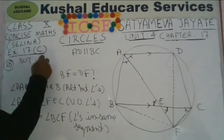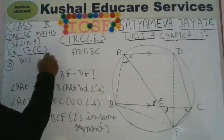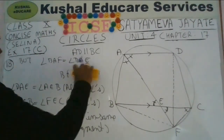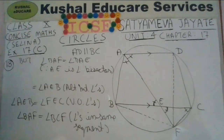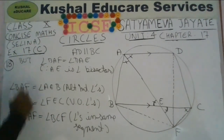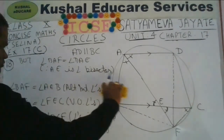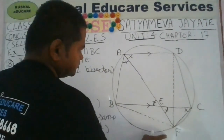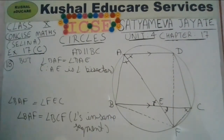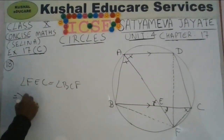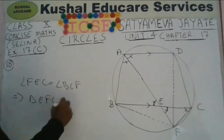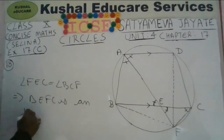AE is the angle bisector of angle BAD, so angle BAE equals angle EAD. Therefore angle FCE equals angle BAF equals angle EAD equals angle AEB equals angle FEC. Since angle FEC equals angle FCE, triangle FCE is isosceles, and therefore EF equals CF.